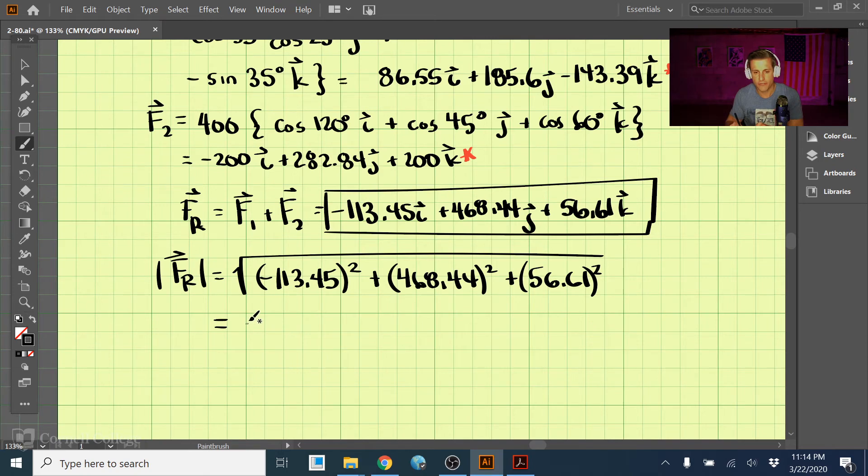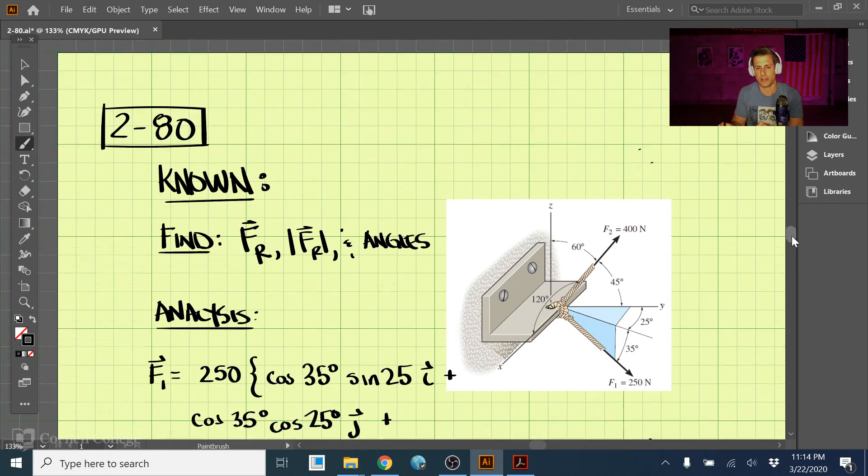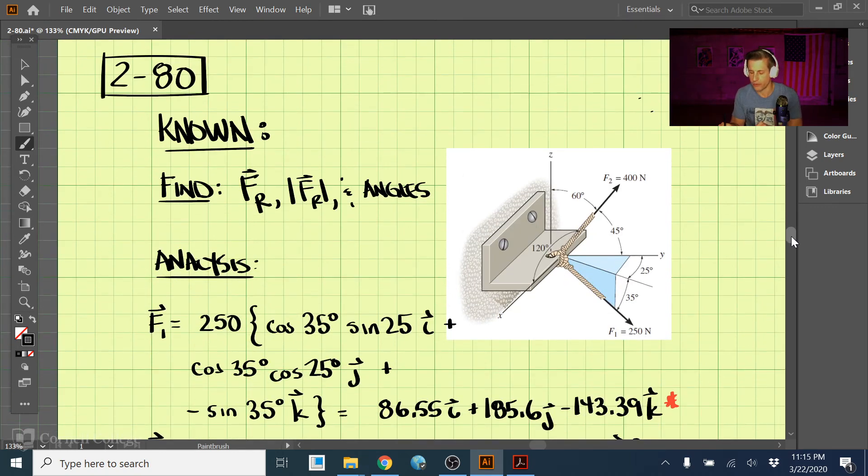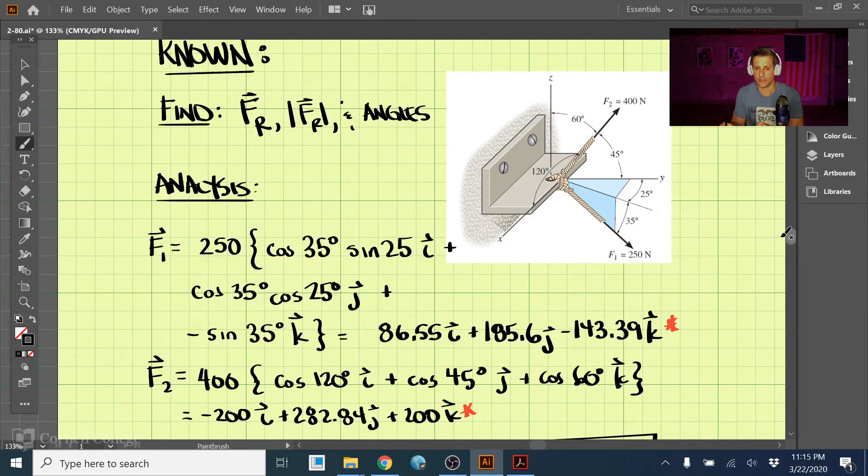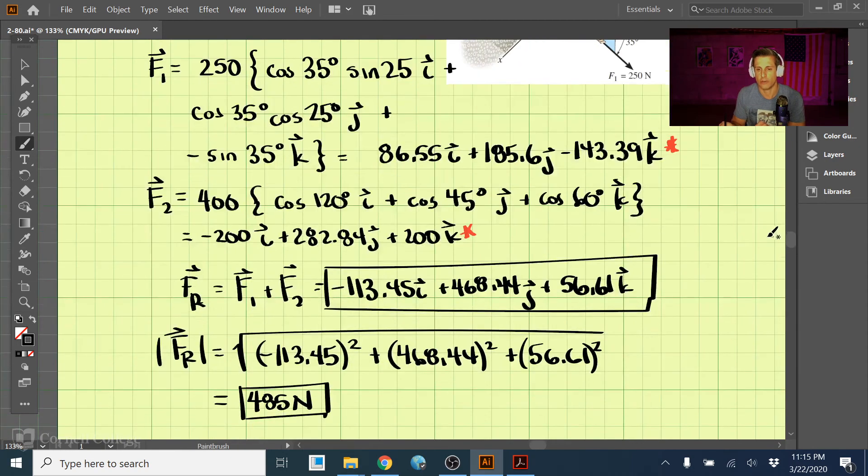So that is our magnitude, and lastly, maybe the most tricky part is the angles. It wants the coordinate direction angles. So we have this vector, whatever direction it points, and it wants the angles between this vector and the x-axis, this vector and the y-axis, and this vector and the z-axis, and those are alpha, beta, and gamma respectively.